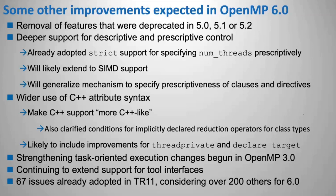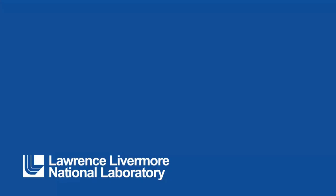All those things and more — we've already adopted 67 issues in TR11. There are over 200 being considered for 6.0. I expect we'll have over 200 approved issues by the time we get to November of 2024, but many of those issues may well get deferred beyond 6.0. That's the state of the OpenMP language at this time and where we're going into the future. I hope you will contact us if you think that something could be improved further. Thank you.